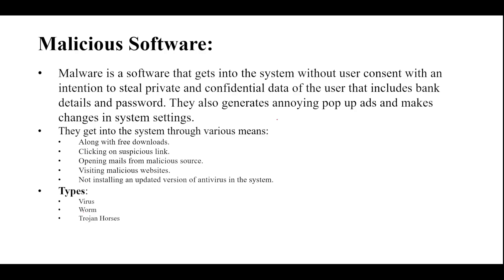Welcome to the series of Network Security Essentials. In this session we will see malicious software. Malicious software, or malware, gets into the system without the permission of the main user. The intention of such software is to steal private and confidential information — bank details, passwords, or confidential user data — and to send annoying pop-up ads and make changes in the system.